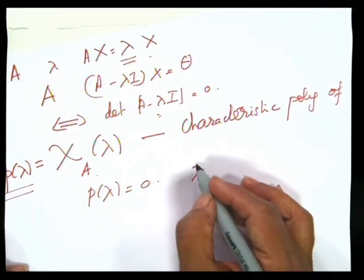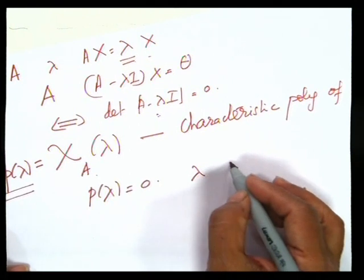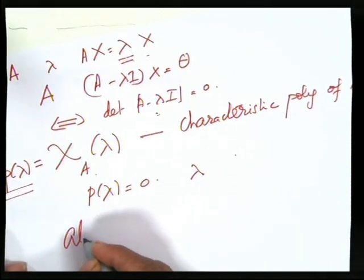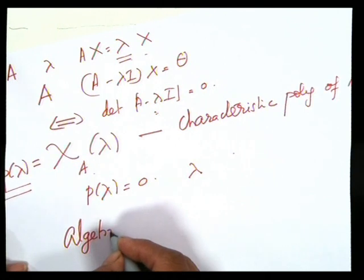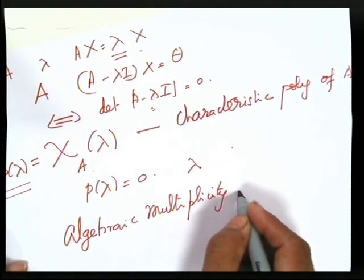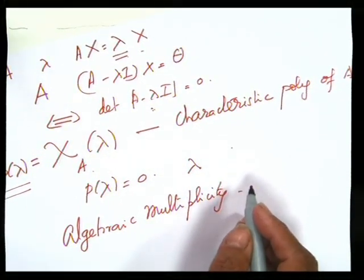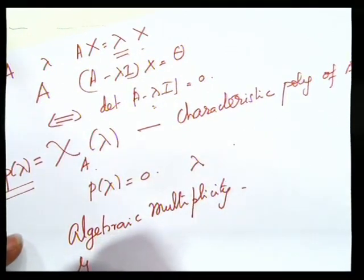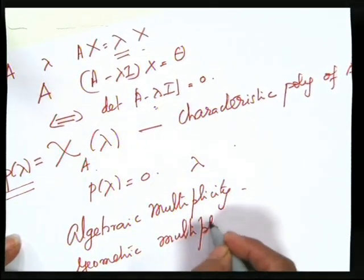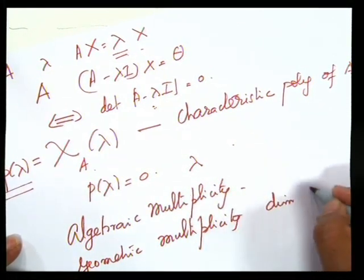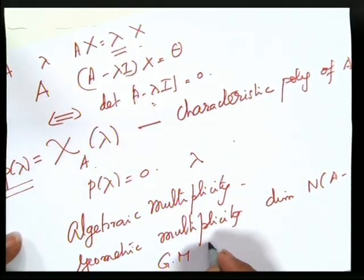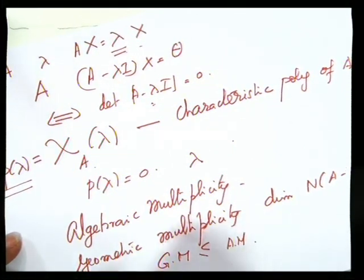Suppose lambda is a root and its multiplicity is 3; we say that the eigenvalue lambda has algebraic multiplicity 3. With every eigenvalue we associate two terms: algebraic multiplicity and geometric multiplicity. Algebraic multiplicity tells you how many times lambda is a root of the characteristic polynomial. Geometric multiplicity is the dimension of the null space of (A − lambda·I). It is well known that geometric multiplicity is always less than or equal to algebraic multiplicity.